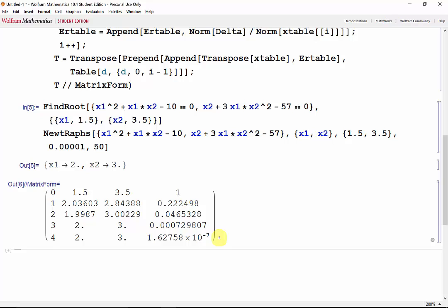In this tutorial, we took a look at using the FindRoot function for nonlinear systems and how to use rules to evaluate multivariable expressions. Then we applied everything, including partial derivatives, to define our own Newton-Raphson method function. That's it for this tutorial. Good luck with your labs.